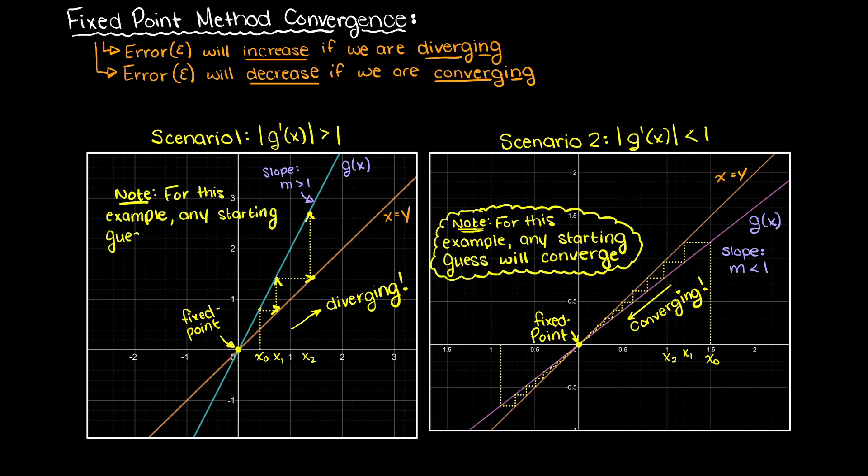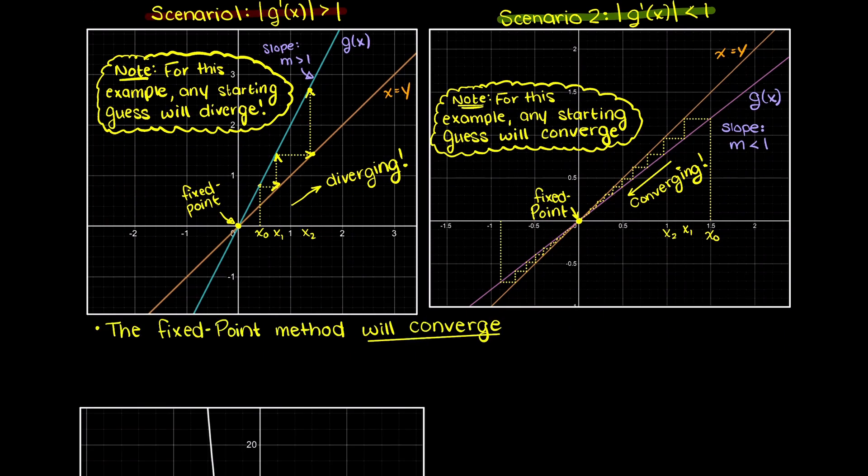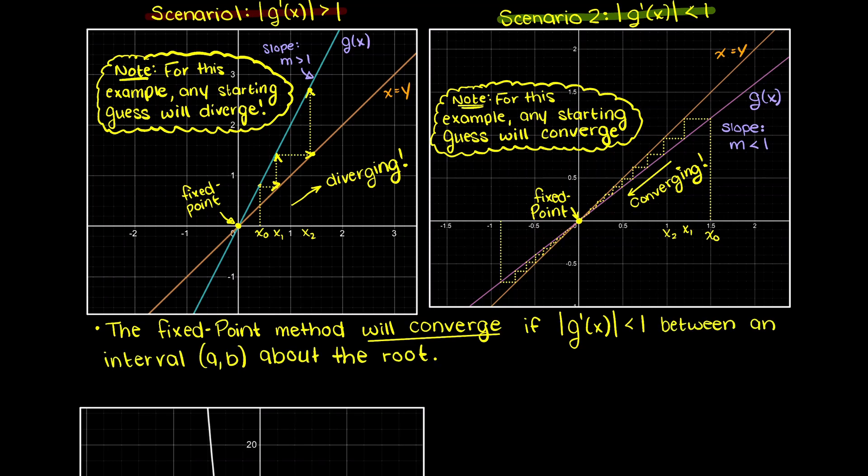So what does this tell us? Well, we can state that our fixed point method will converge if the absolute value of g(x)'s derivative remains under 1 within a given interval around our fixed point, then we are guaranteed convergence on our root.